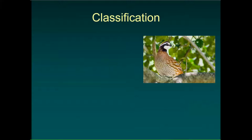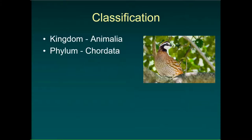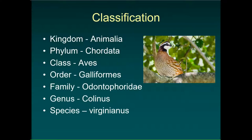To close out, remember we break our organisms down into: kingdom, phylum, class, order, family, genus, and species. Don't forget those. Our bobwhite — one of our new world quail species — is Colinus virginianus. Why Latin? Because that's how it started and everyone uses it.